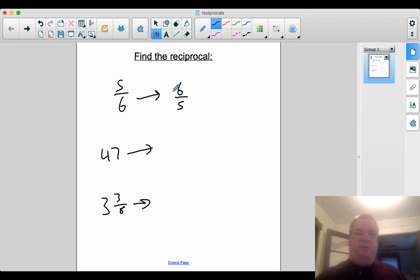So whenever you're dealing with your reciprocals, one will be more than one and the other will be less than one. All right, 47. That's a whole number. So I can think of it as being over one. I flip that, I get 1/47.